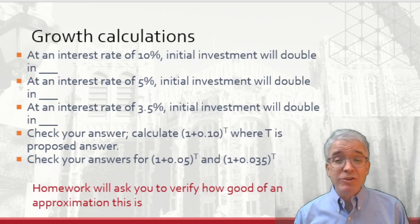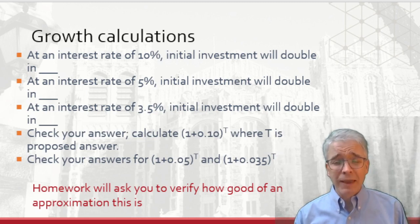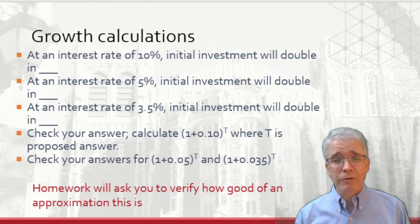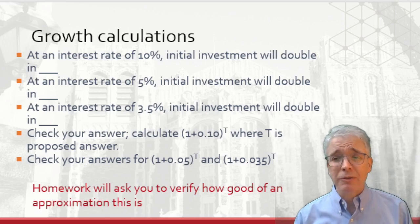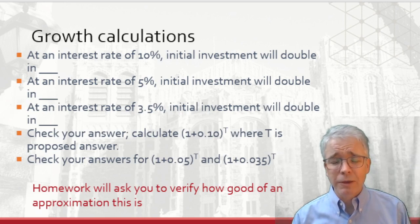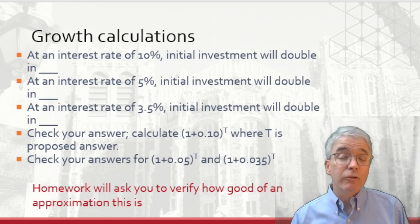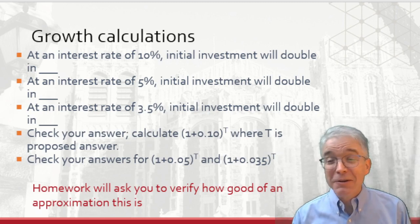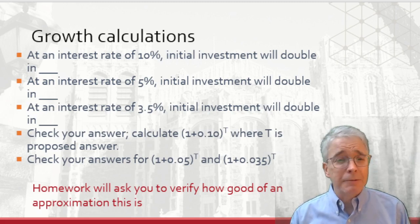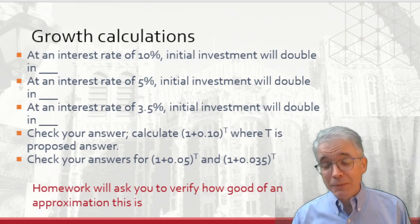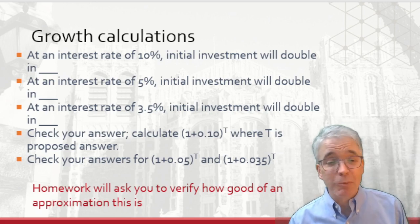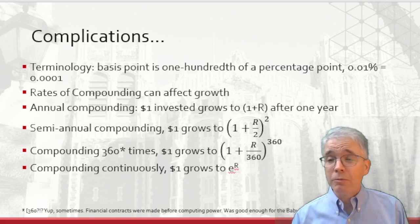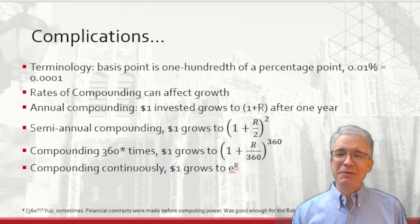You can check your answers — calculate (1.10) to the seventh power on your calculator to verify it's close to doubling. The homework will ask you to check how good an approximation the Rule of 70 really is. Now let's add some complications, because you might have thought you had this — so let's go a little further.